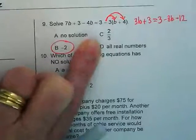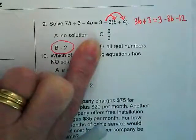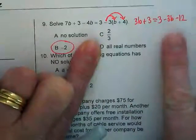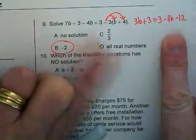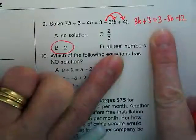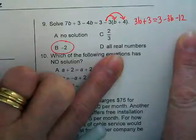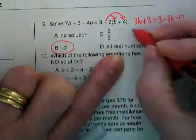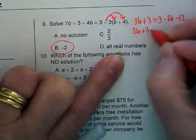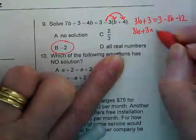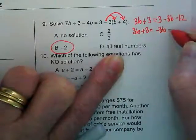And then the next step is to combine the like terms on the right side. Positive 3 and negative 12 are going to be negative 9. So I get 3b plus 3 is equal to negative 3b minus 9.